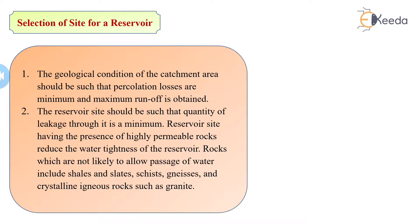The reservoir site should strictly have minimum leakage. If pervious or porous rock is present, continuous application of water on such rock may cause it to crack or divide into pieces. Through these cracks and open spaces, water gets deposited into the rock, reducing the water level in the reservoir and reducing its tightness. Therefore, the reservoir site should strictly have minimum leakage.